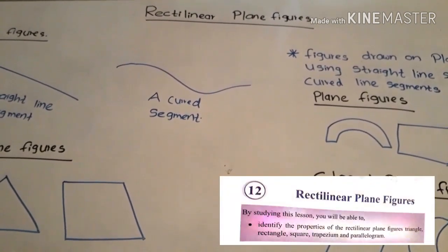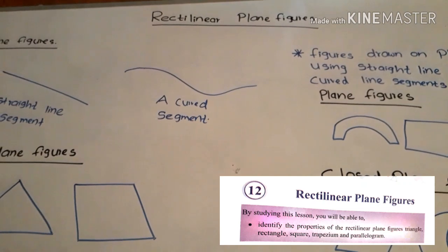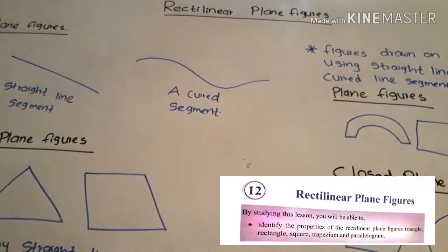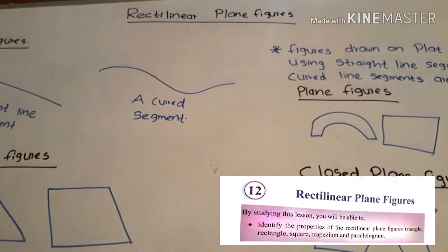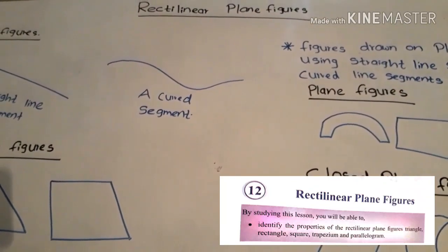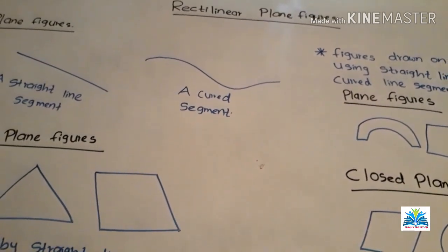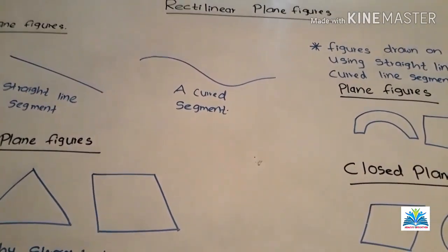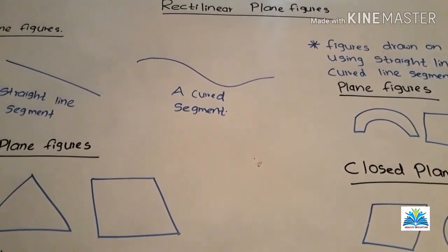The lesson is rectilinear plane figures. This is Grade 6, lesson number 12, in Part 2 of the math textbook. Doing this lesson, you will be able to identify the properties of rectilinear plane figures. You can follow up the textbook with this video, then you can understand the lesson more effectively.